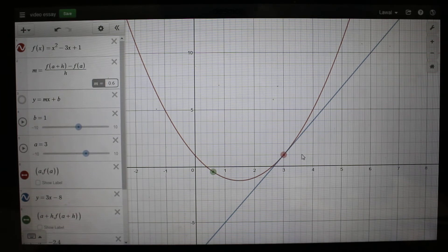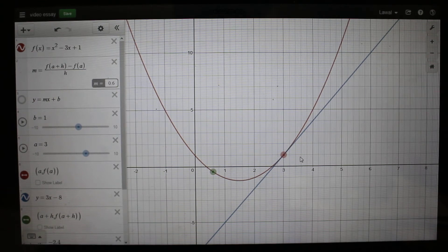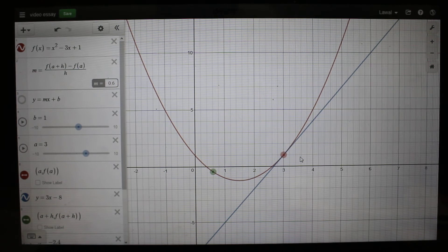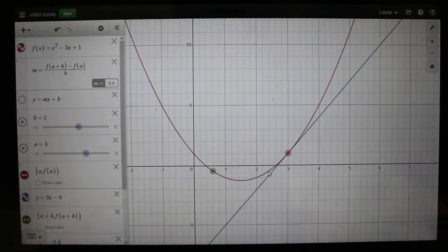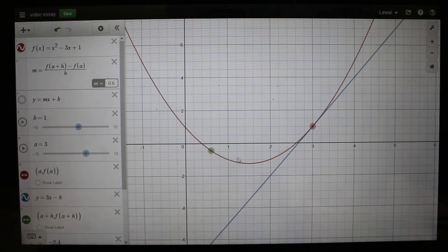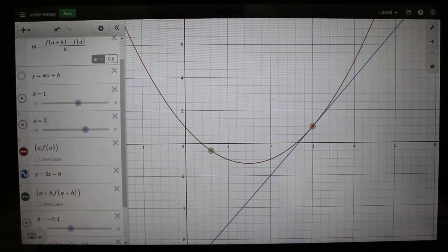Because we want to find another secant line, we have to use the slope formula, which is (y₂ - y₁) over (x₂ - x₁), bringing this point about, this green point.